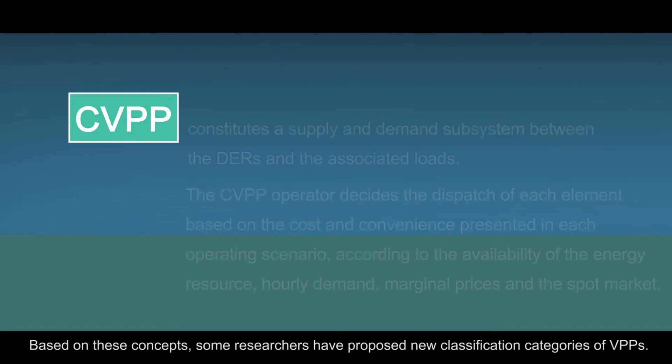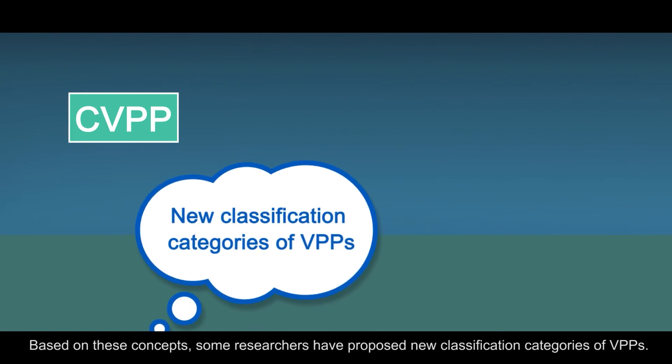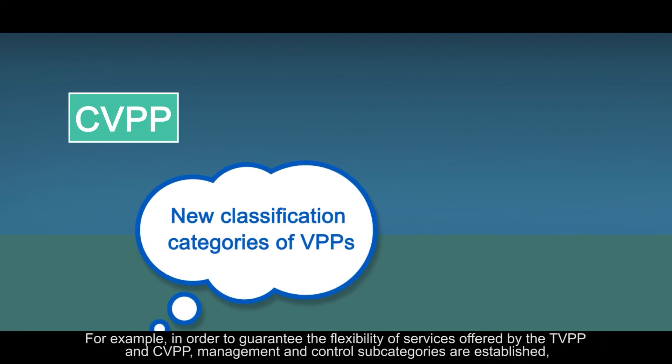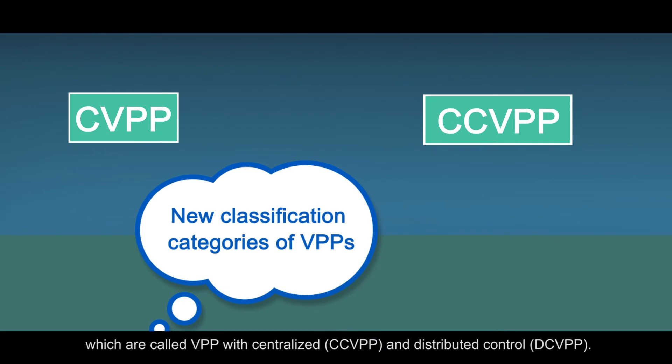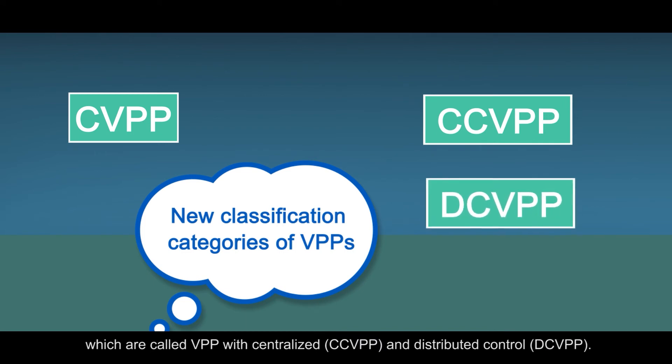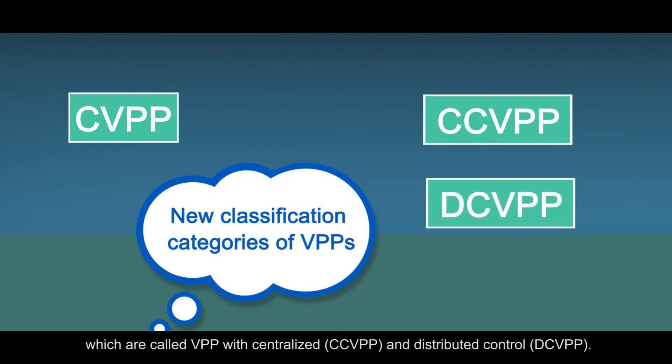Based on these concepts, some researchers have proposed new classification categories of virtual power plants. For example, in order to guarantee the flexibility of services offered by the technical virtual power plant and commercial virtual power plant, management and control subcategories are established, which are called virtual power plant with centralized and distributed control.